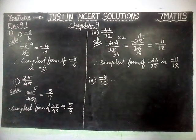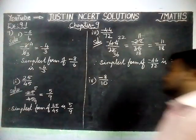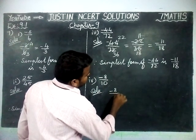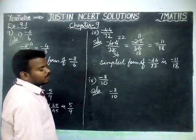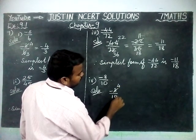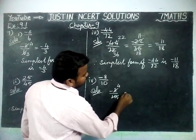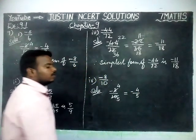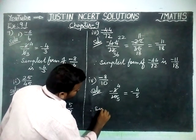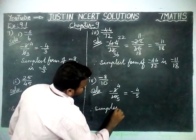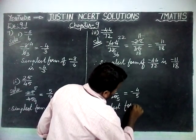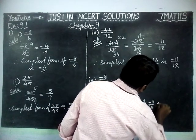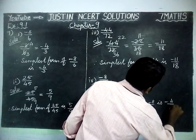Next, fourth question: minus 8 by 10. We are going to divide it by a common divisor 2. 4 twos are 8, 5 twos are 10. So now the simplest form is minus 4 by 5. Hereafter we cannot divide it by a common divisor. Therefore, the simplest form of minus 8 by 10 is minus 4 by 5.